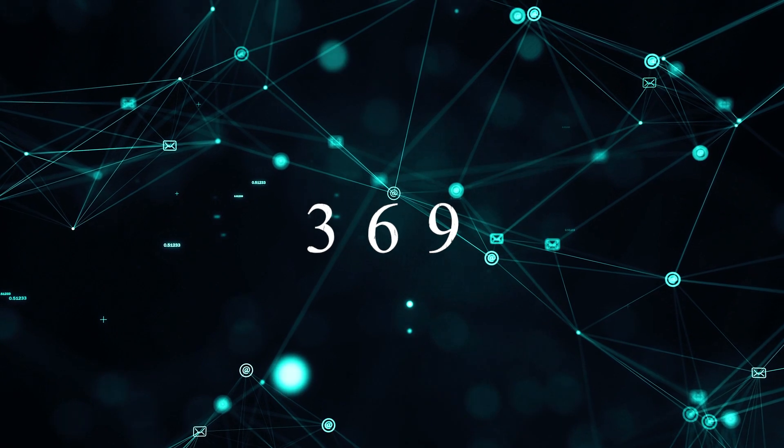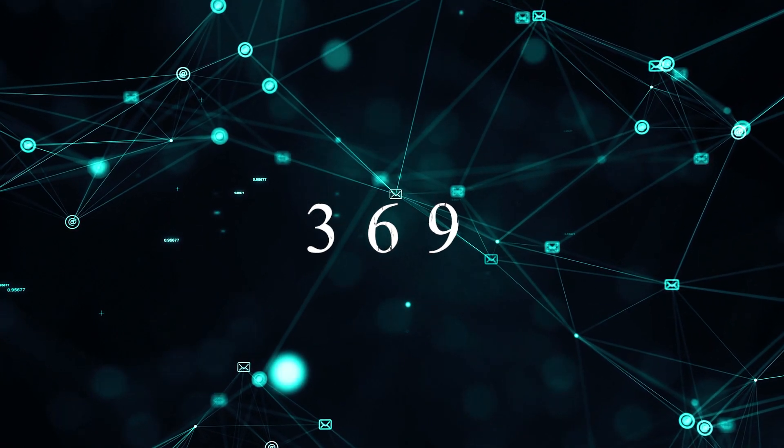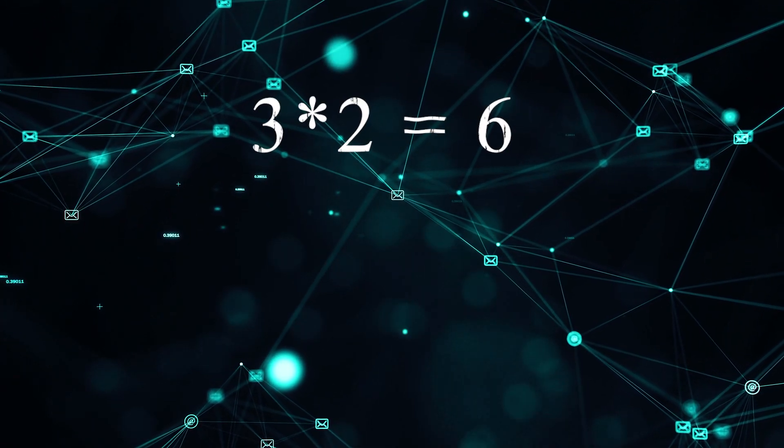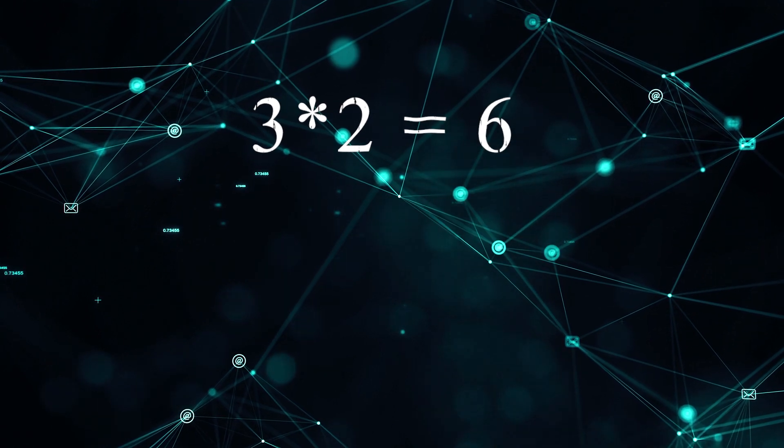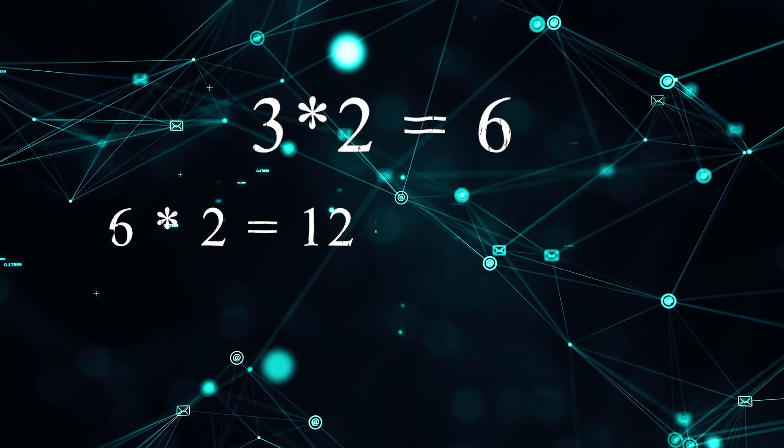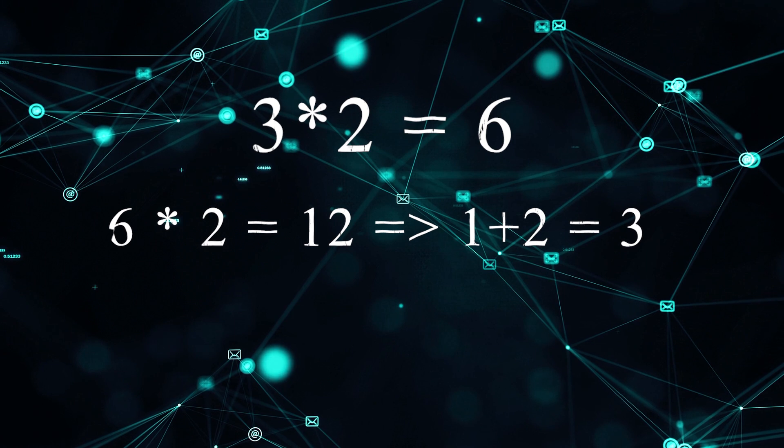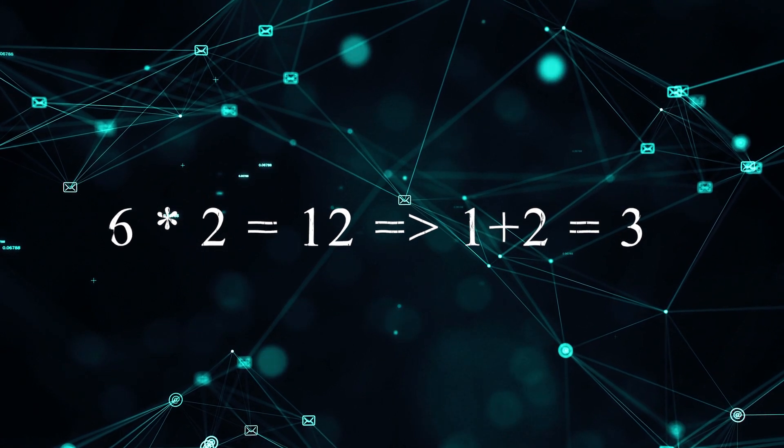However, there is something strange once you start doubling them. 3 doubled is 6. 6 doubled is 12. 1 plus 2 is again 3. In this pattern, there is no mention of 9. It's like 9 is beyond, completely free from both patterns.